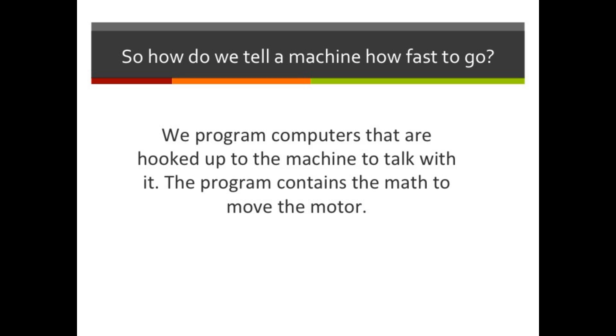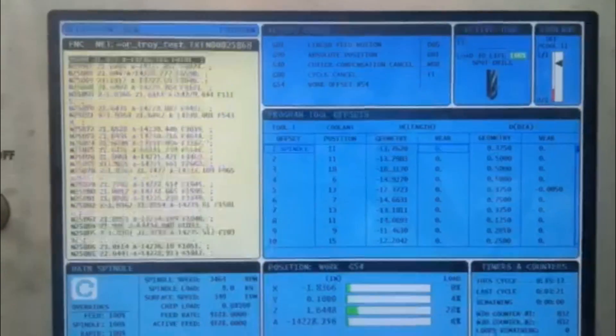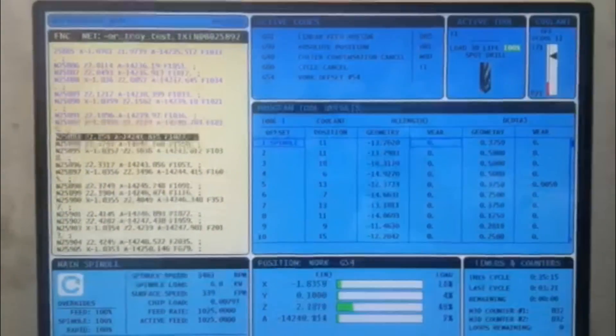So now you might be wondering how you talk to a machine to tell it how fast to go. Well, we program computers that are hooked up to the machine to talk with it. In this program, we write the math equations to calculate and tell the machine how fast it should go. Here is an example of a program that controls the movements of a machine.